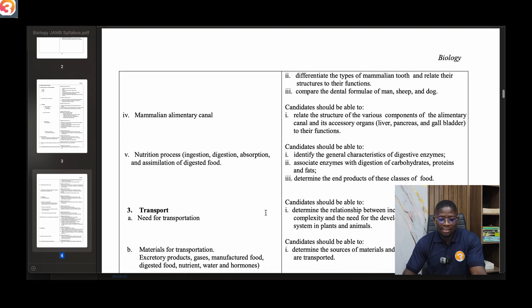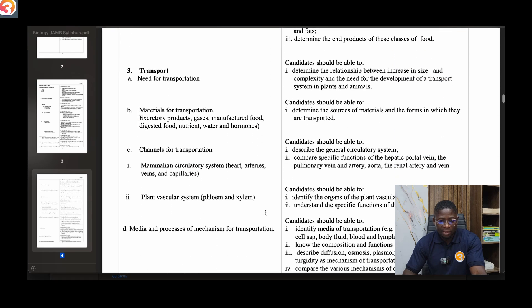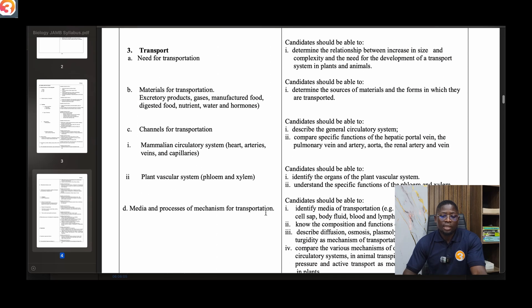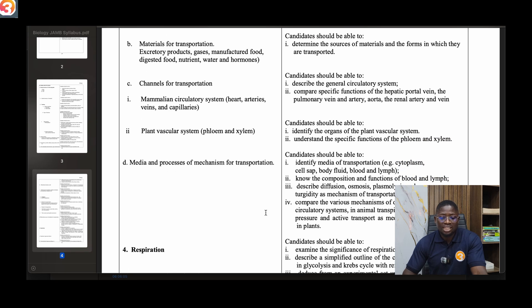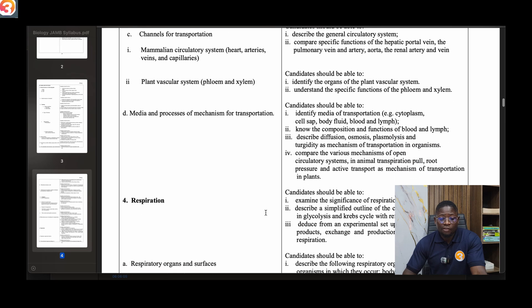Number three is transport - need for transportation, materials for transportation like excretory products, gases, manufactured digested food, nutrients, water and hormones. Then talk about channels for transportation, mammalian circulatory system, the heart, the arteries, the veins and capillaries. Talk about plant vascular system, xylem and phloem. Then media and processes or mechanism for transportation.